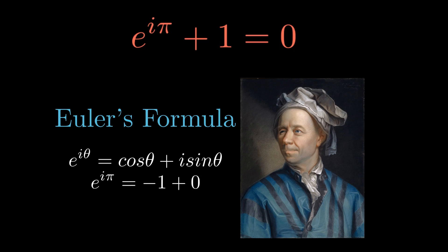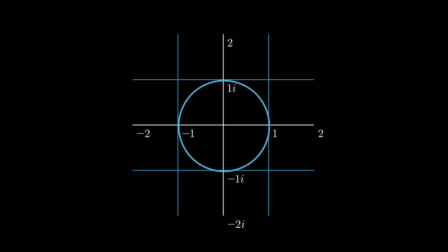To understand this formula, imagine a unit circle in the complex plane. Consider a point on the circle at angle theta. This point has coordinates cos theta, sine theta. Now each point on the circle represents a complex number z, with cos theta as the real part and sine theta as the imaginary part. As we change the angle theta, the point moves along the circle.